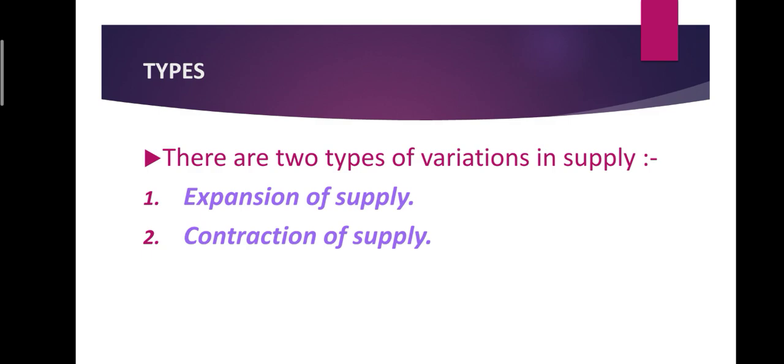Variations in supply are of two types. First is expansion of supply, and the second one is contraction of supply.